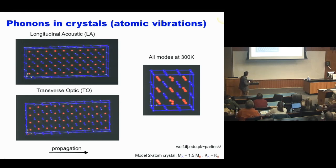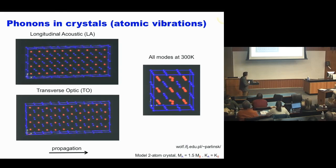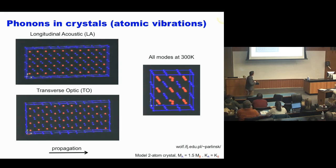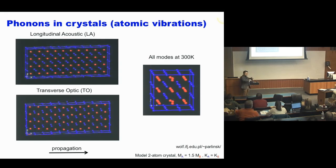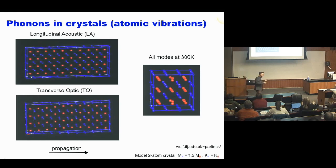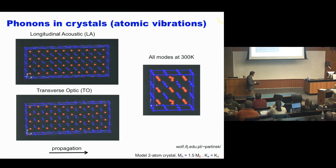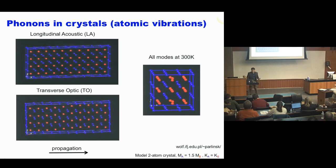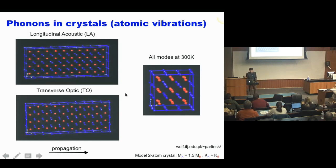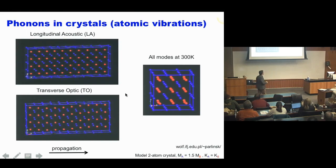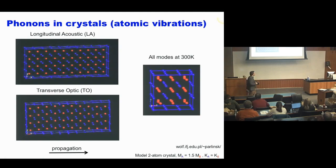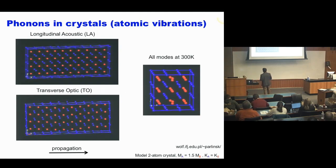There's another type of mode: a shear motion of atoms perpendicular to the direction of propagation of the wave - a transverse mode. You also notice the blue and red atoms vibrating out of phase with one another, making this an optic mode rather than an acoustic mode. We can superimpose all of these different modes. At a given temperature, we populate those modes according to Bose-Einstein statistics and recover this thermal jitter - this is the concept of heat.